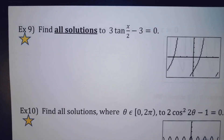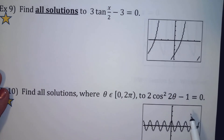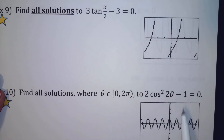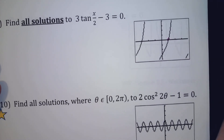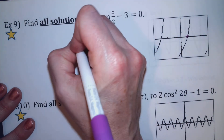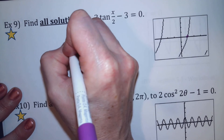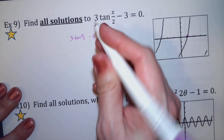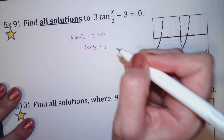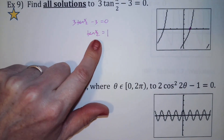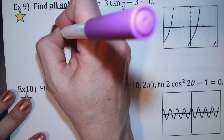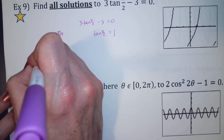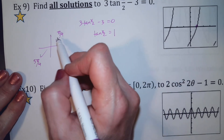In the next two problems, we start to have something inside the trig function — the tangent and cosine functions. That's going to be different. Let's go for it: tangent of x over 2 minus 3 equals 0. We're going to add 3 and divide by 3 to isolate the tangent. So tangent of x over 2 equals 1. At this point you're locked into doing the arc tangent — when is tangent equal to 1? It's at pi over 4, and the period is pi, so: x over 2 equals pi over 4 plus pi·n.